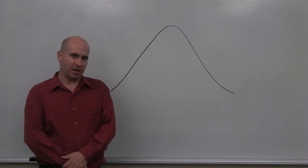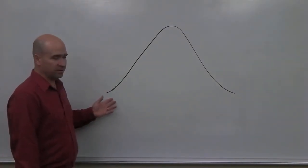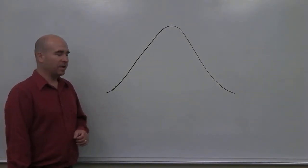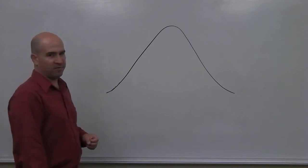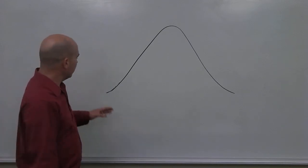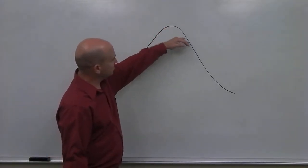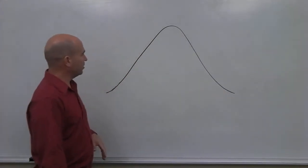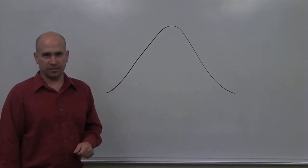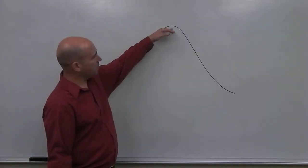I'd like to take a few minutes to talk about what's known as the normal distribution, or normal curve, and describe some of its properties. Here we have this normal distribution, or normal curve. It's also known as a bell-shaped curve. Notice it's in the shape of a bell.